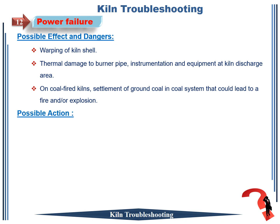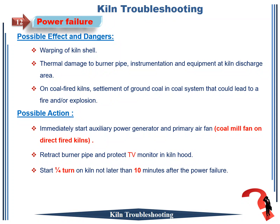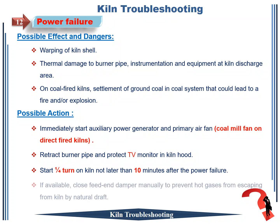Possible action to take: 1. Immediately start auxiliary power generator and primary air fan, coal mill fan on direct-fired kilns. 2. Retract burner pipe and protect TV monitor in kiln hood. 3. Start a one-quarter turn on kiln no later than 10 minutes after the power failure. 4. If available, close feed-end damper manually to prevent hot gases from escaping from kiln by natural draft.